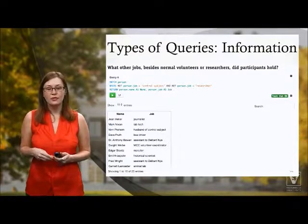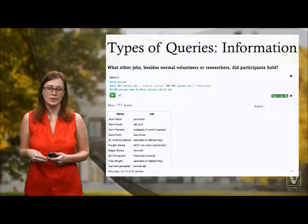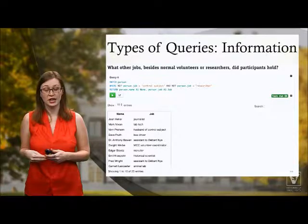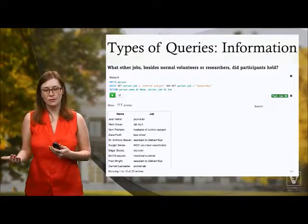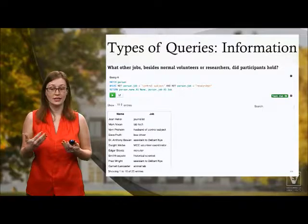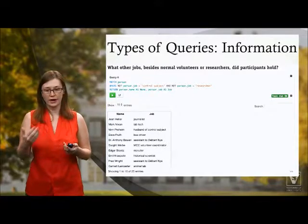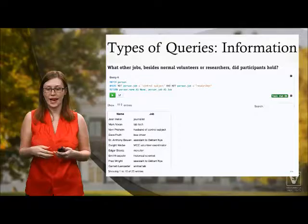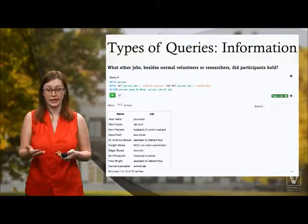The second type of query lists information as a table. The question is: what other jobs besides volunteers and researchers did participants hold? If you go to the Neo4j graph gist and look at it, you'll see that none of this information displays on the nodes themselves. The only way to access it is through a query, and it finds any node that has a property that's not researcher or volunteer and lists them here.